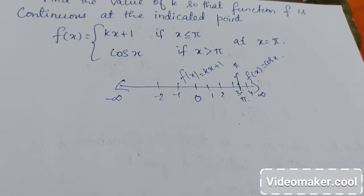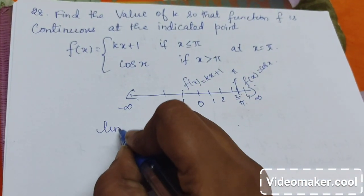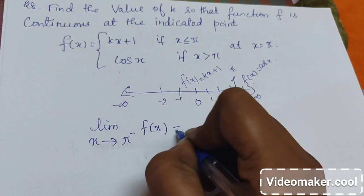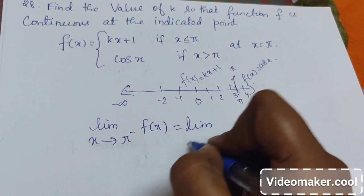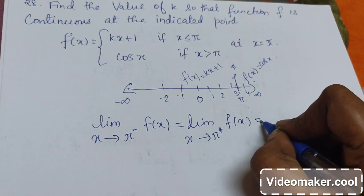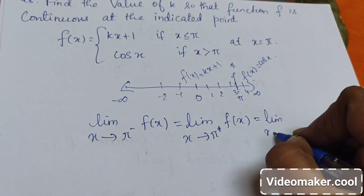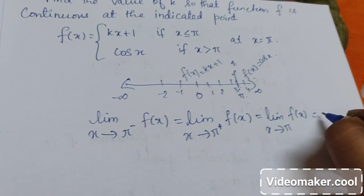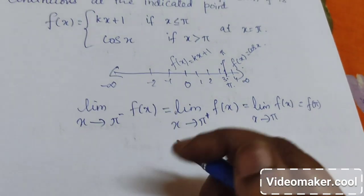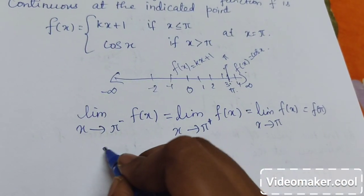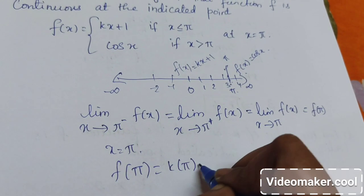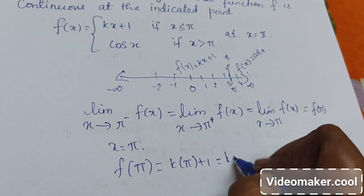We will assume the function is continuous. When the function is continuous, its left hand limit will be equal to the right hand limit, and that is equal to the functional value. Now when the value of x is pi, f(pi) will be k·pi plus 1.